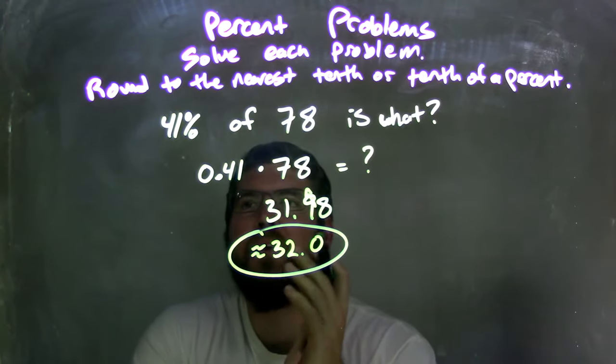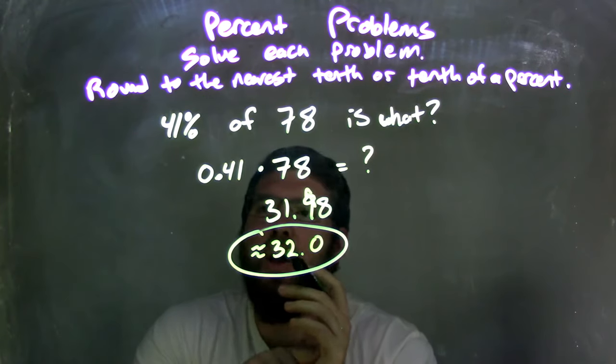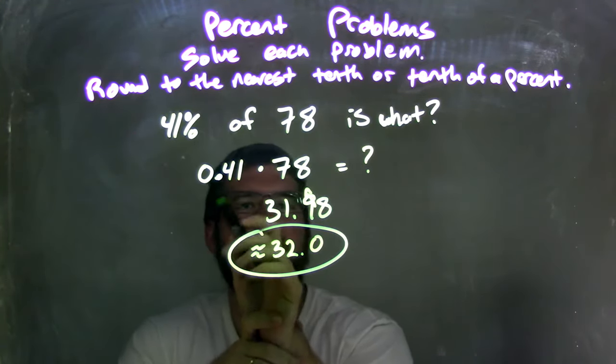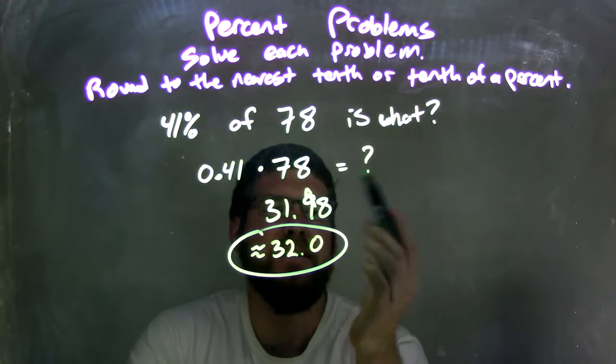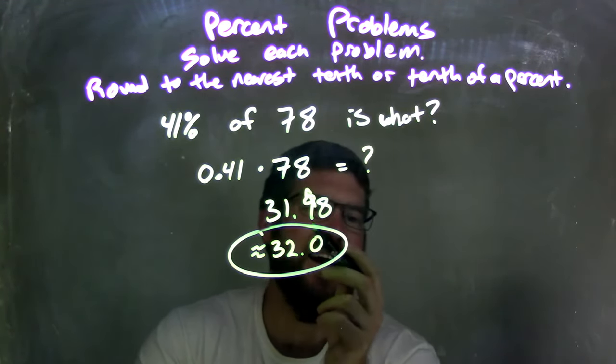So let's recap. We're asked the question, 41% of 78 is what? I took the 41%, I converted it into a decimal, giving me 0.41. I multiplied that by 78 to get what we're looking for. Used my calculator and got 31.98.